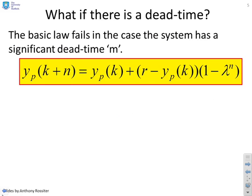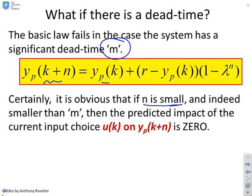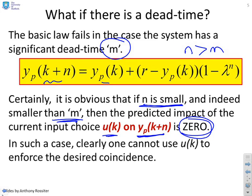The basic law fails in the case where a system has a dead time m. And in particular, if you write this formula here, the key issue is that if n is small, and specifically if it's smaller than m, then the predicted impact of the current input choice u(k) on the predicted output is zero. So you can see immediately n has to be bigger than m, otherwise the degree of freedom you're giving yourself has no impact at all on the coincidence point. So in that case we couldn't use u(k) to enforce the desired coincidence.